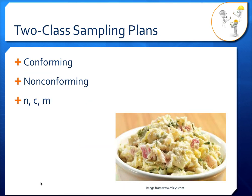In a two-class sampling plan, we have conforming versus non-conforming — those are the two classes. We have N, C, and little m. N is the number of samples we have to test, C is the maximum number of non-conforming samples allowed, and little m is a microbiological criterion — the maximum number of colony-forming units per gram of food allowed in a conforming sample. If we have too many colony-forming units, we count that as a non-conforming sample.